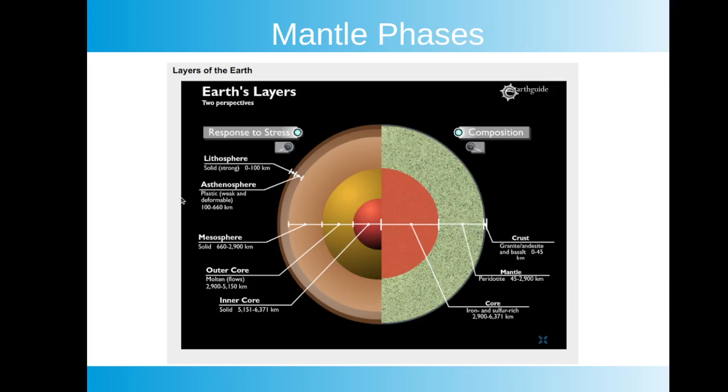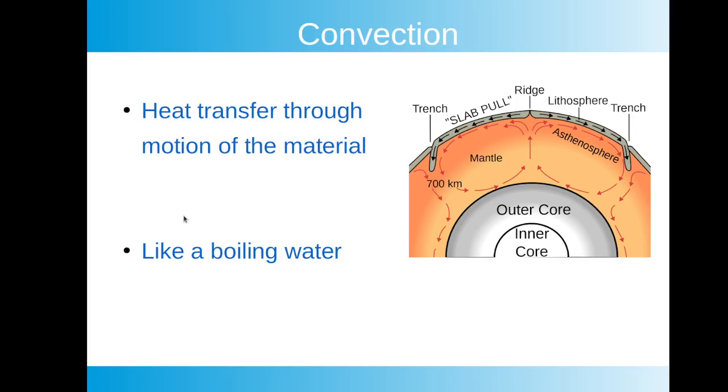Where this really gets into play and where some confusion comes in is when we talk about convection in the mantle. This is an image from Wikipedia, so it's freely released. It shows that we have these convection currents in the mantle which sort of drag the asthenosphere. This is responsible for, or the causing mechanism of, plate tectonics.